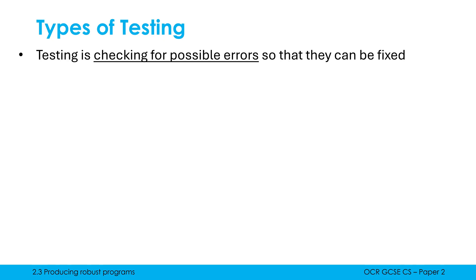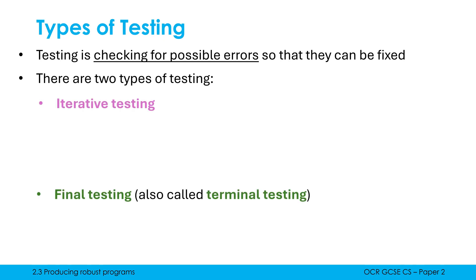Users are not happy if the software is crashing, not responding, or being slow — we want to try and avoid that. In software development companies, there are two main types of testing: iterative testing and final testing, which is also called terminal testing. A company would typically employ both nowadays; in the past you may only have done final testing, but iterative testing is used by all major development companies now as well.